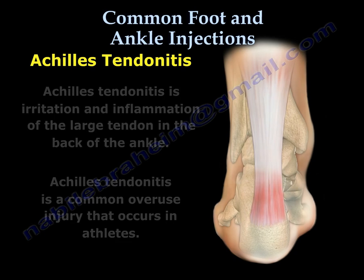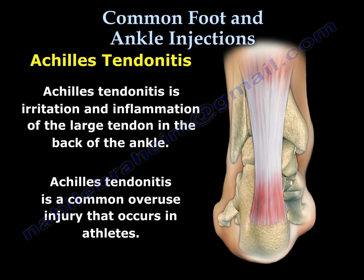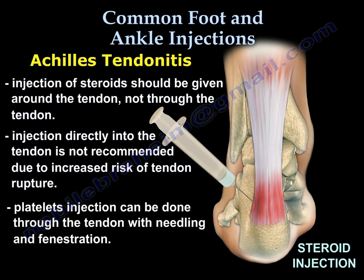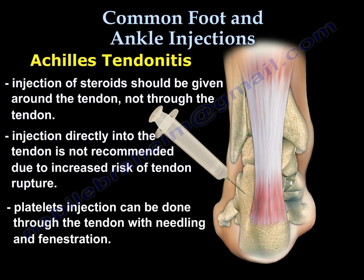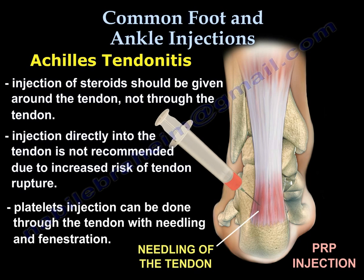Achilles tendonitis is irritation and inflammation of the large tendon in the back of the ankle. It is a common overuse injury that occurs in athletes. Injection of steroids should be given around the tendon and not through the tendon, as injection directly into the tendon is not recommended due to increased risk of tendon rupture. However, platelet-rich plasma injection can be done through the tendon with needling and fenestration.